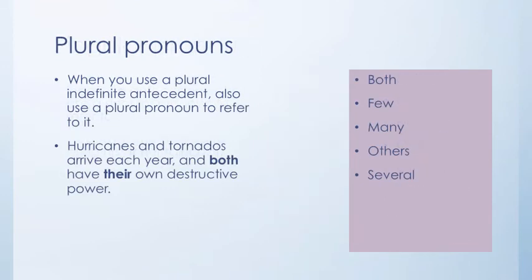When you use a plural indefinite antecedent, also use a plural pronoun to refer to it. For example, hurricanes and tornadoes arrive each year, and both have their own destructive power. Both is plural because it refers back to hurricanes and tornadoes, so you would use their. Other plural pronouns include few, many, others, and several.